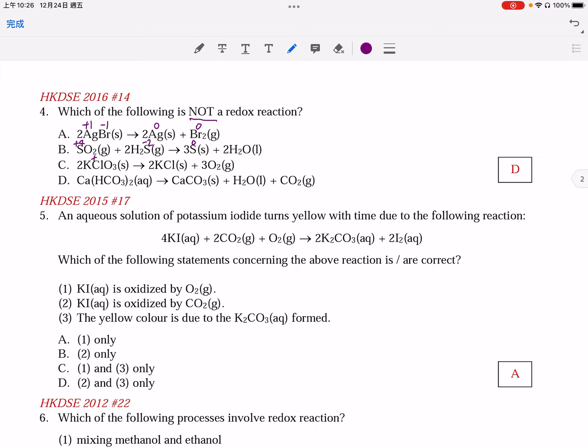Option C, KClO3, the Cl has oxidation number positive 5. It becomes KCl, the oxidation number of Cl being negative 1. Of course, for oxygen, oxidation number changes from negative 2 to 0. So all these 3 are redox. Actually the answer is D. D is not a redox reaction. You may have some checking, and then you will find that the oxidation number of carbon calcium remains positive 4. Of course, for calcium, positive 2.